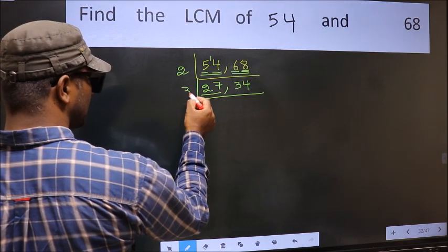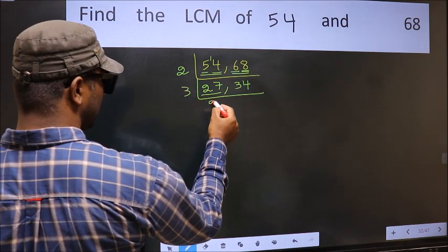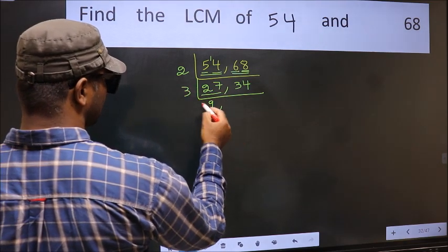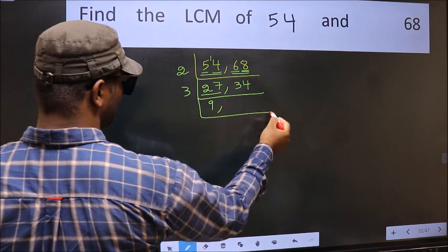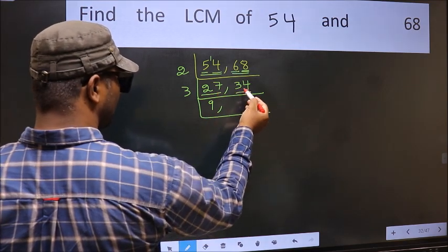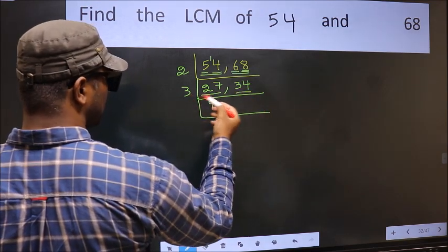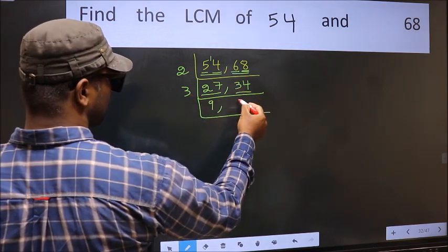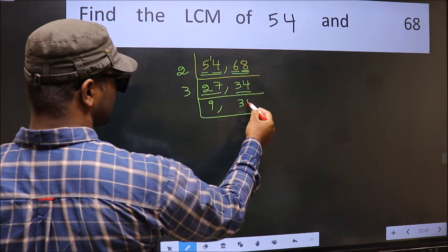27: when do we get 27 in the 3 times table? 3×9 is 27. The other number is 34, which is not divisible by 3, so we write it down as it is.